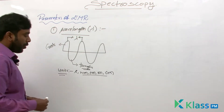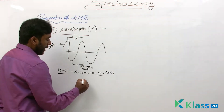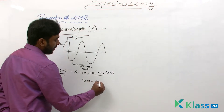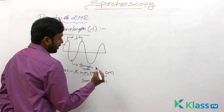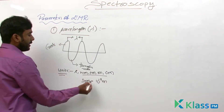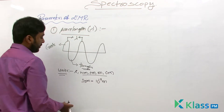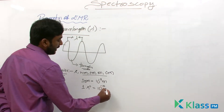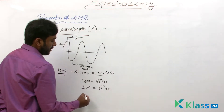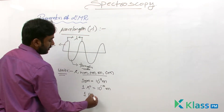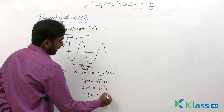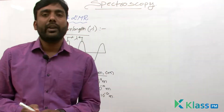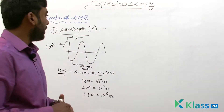We should know these unit conversions: one nanometer is equal to 10 to the power of minus 9 meters; one angstrom is equal to 10 to the power of minus 10 meters; one picometer is equal to 10 to the power of minus 12 meters. These are the ways to express wavelength.